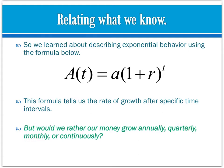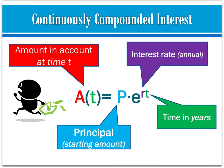Wouldn't we rather have our money grow continuously? Whenever something is continuously compounded, we use the PERT formula instead. We call it PERT because it's P times e raised to the exponent RT. R is our annual interest rate — usually measured in years — T is our time in years, P is the principal or starting amount, and A of t is the amount in the account after time t passes.